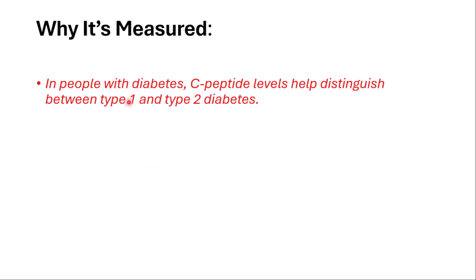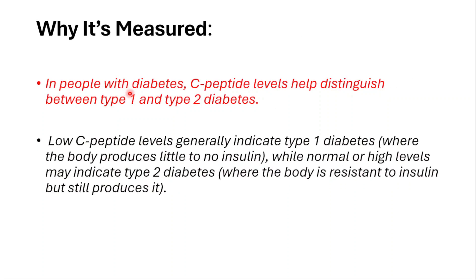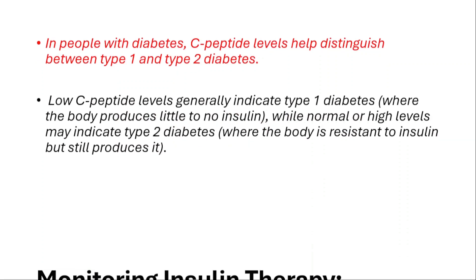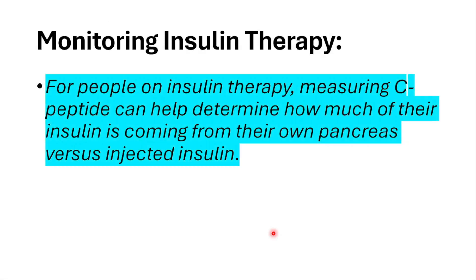Why do we measure C-peptide levels in people with diabetes? C-peptide levels help distinguish between type 1 and type 2 diabetes. Low C-peptide levels generally indicate type 1 diabetes, where the body produces little to no insulin, while normal or higher levels may indicate type 2, where the body is resistant but still producing insulin.